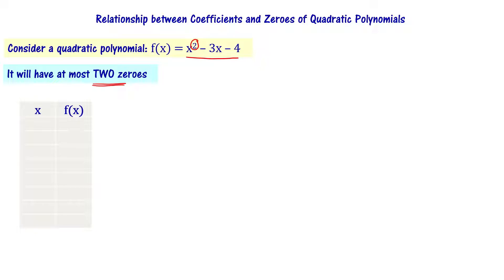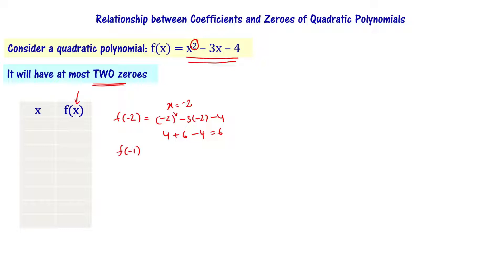To find the zeros, we use the graphical method by assuming different values of x and computing f of x. For example, when x equals minus 2, f of minus 2 equals minus 2 whole square minus 3 times minus 2 minus 4, which gives 4 plus 6 minus 4, equal to 6. Similarly, f of minus 1 equals 1 plus 3 minus 4, equal to 0.